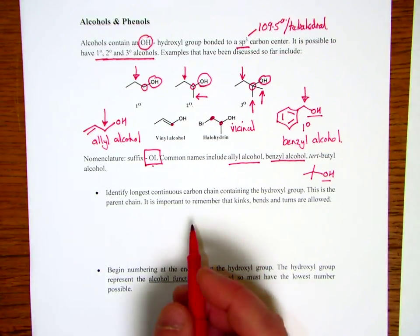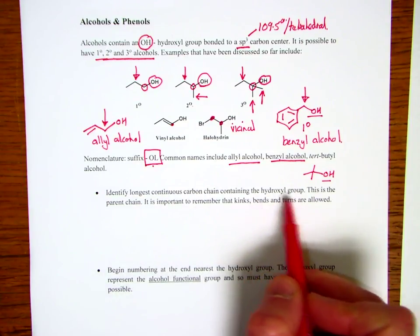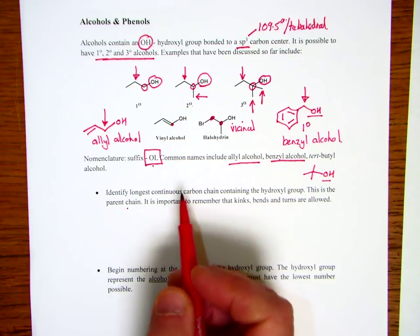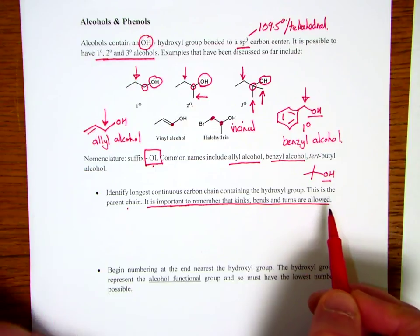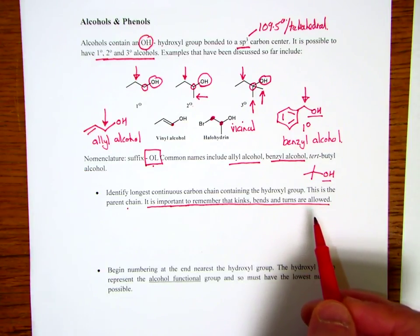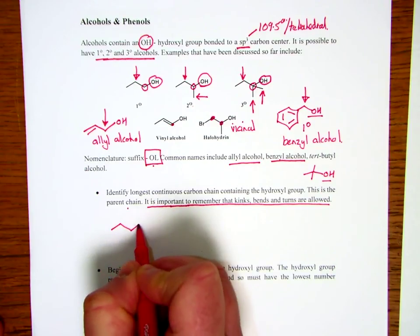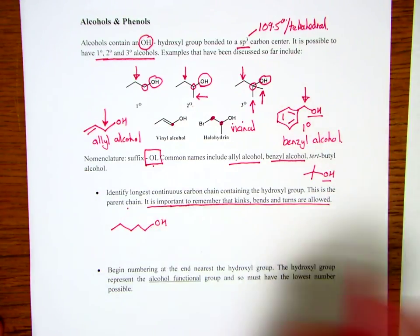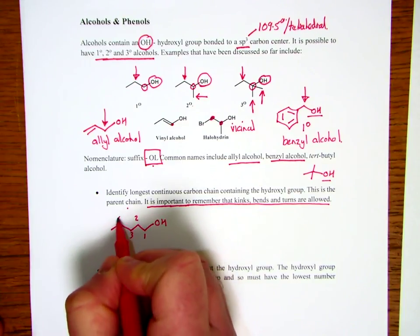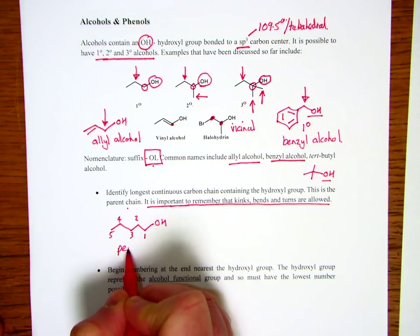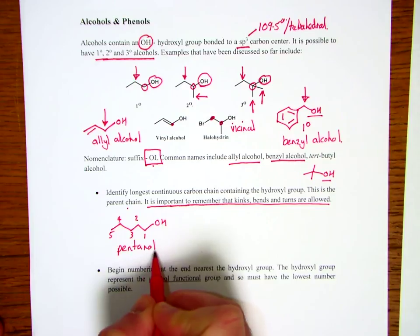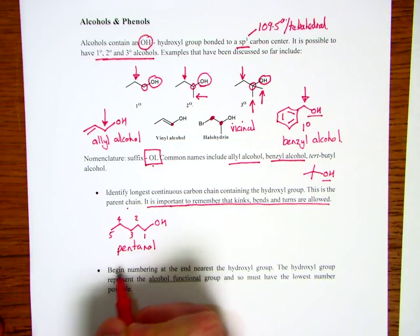So if we look at the first rule, it says identify the longest continuous carbon chain containing the hydroxyl group. This is the parent chain. I want to reiterate something we've always focused on. It is important to remember that kinks and bends and turns are allowed. And we use that to allow ourselves to manipulate our stereochemistry to a certain extent. So if we look at this carbon chain like so, we can count the carbons: one, two, three, four, five. We know the prefix for five is pent. So this becomes pentanol. OL because it's a hydroxyl and alcohol. Pent because there are five carbons. AN because it's saturated, and so there are all single bonds in this group.